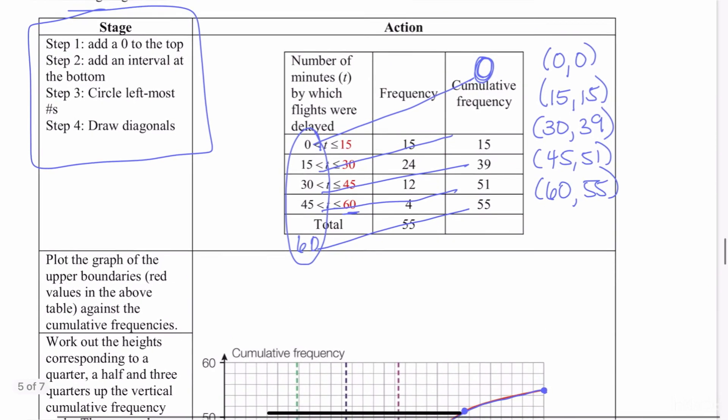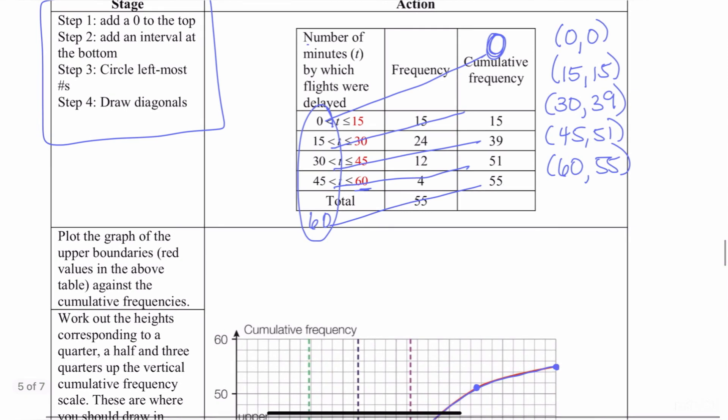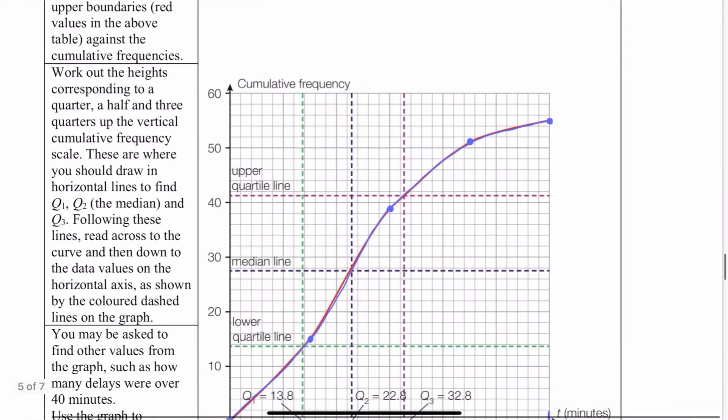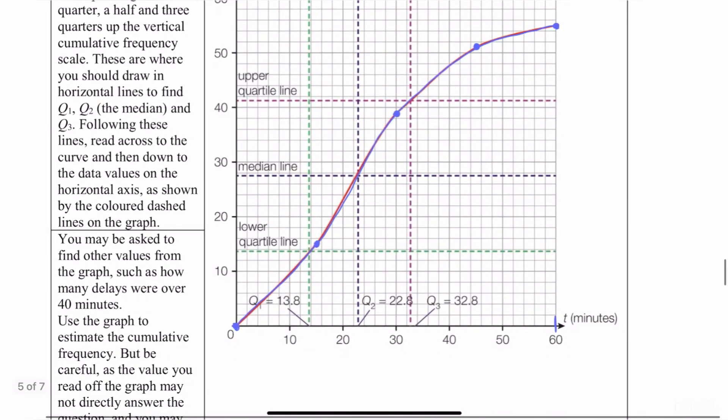In this case, this problem on the x-axis is about the number of minutes by which flights were delayed. So notice that on the x-axis, they have labeled it T in minutes. So that represents time in minutes.